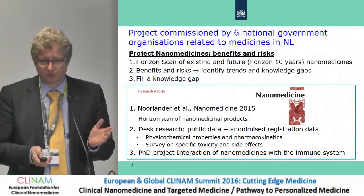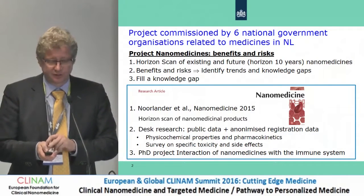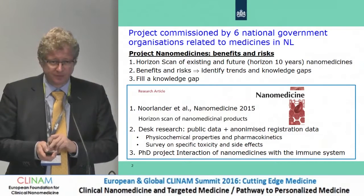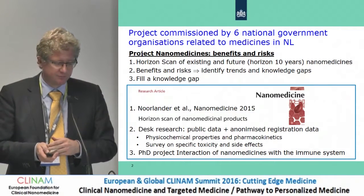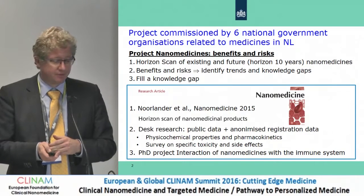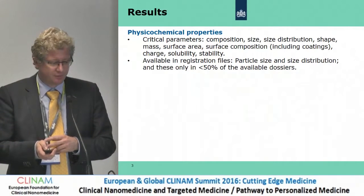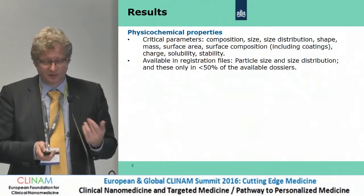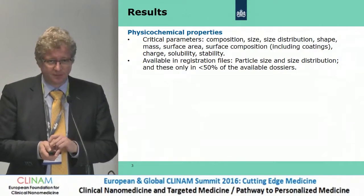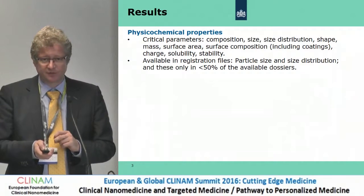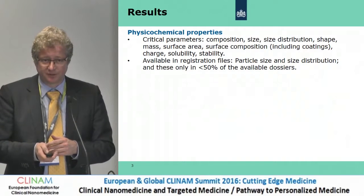Some of the data is already on my poster number 85, and some is still work in progress. The third part is a PhD project on the interaction of nanomedicines with the immune system. A related paper was actually published three days ago in the International Journal of Nanomedicine. For the physical chemical properties, we looked at a number of critical parameters, and the only parameters we could really find in publicly available data and registration files were size and size distribution — and this was only in 50% of the available dossiers.